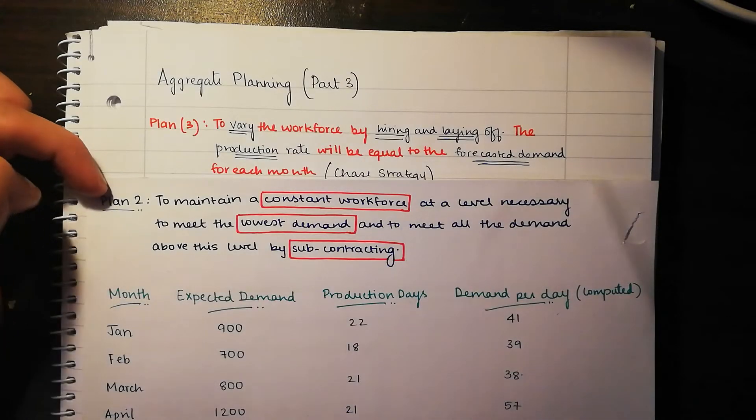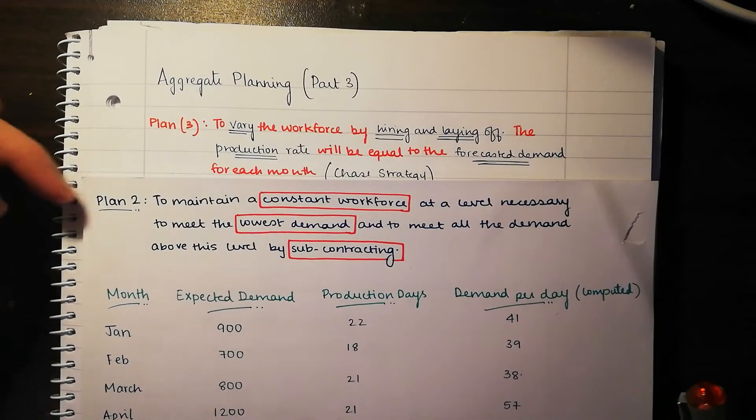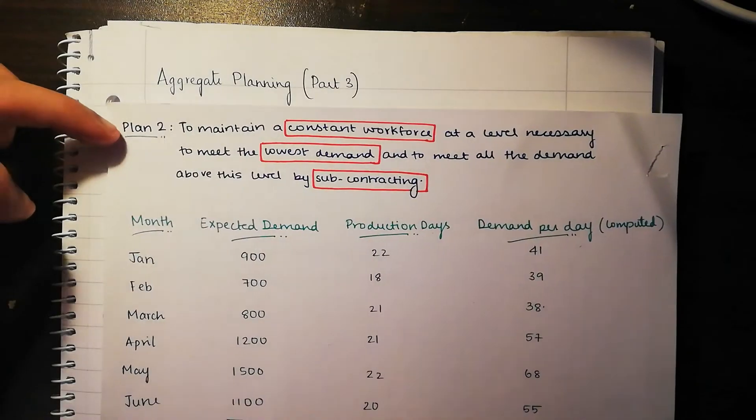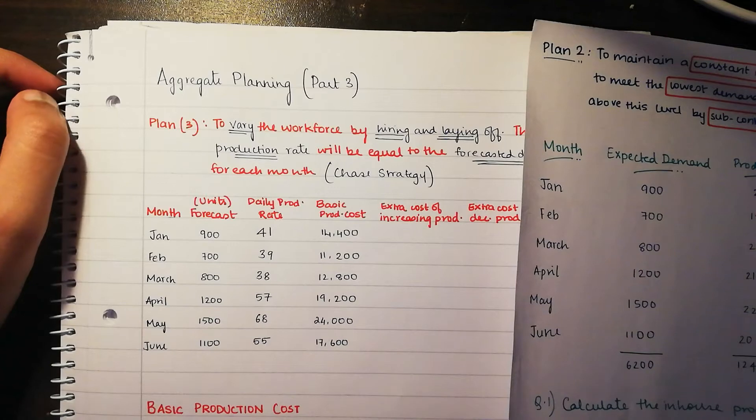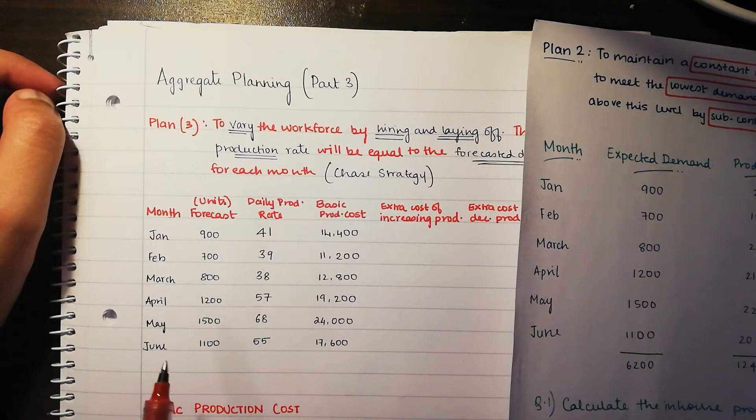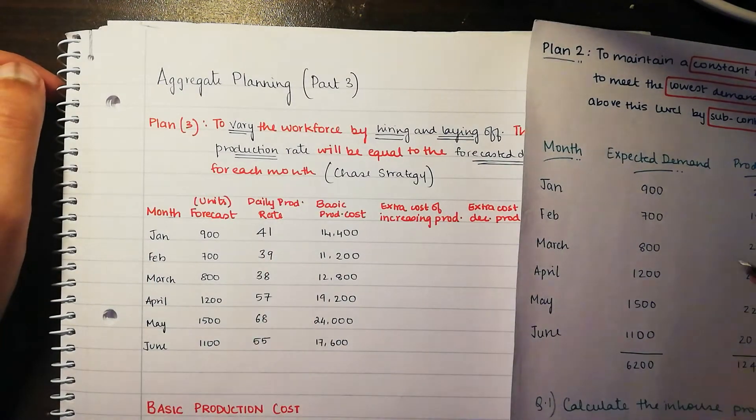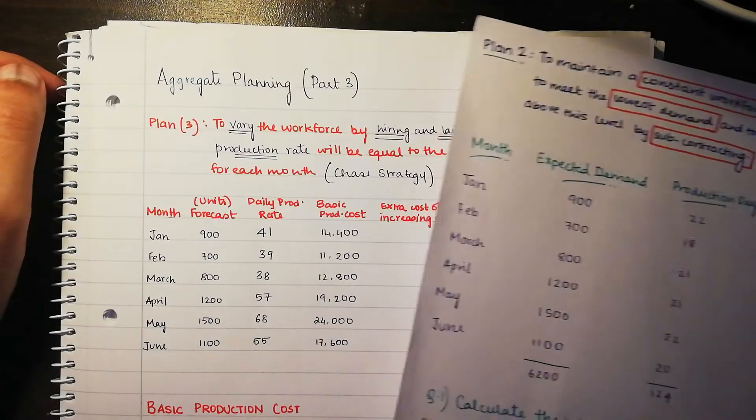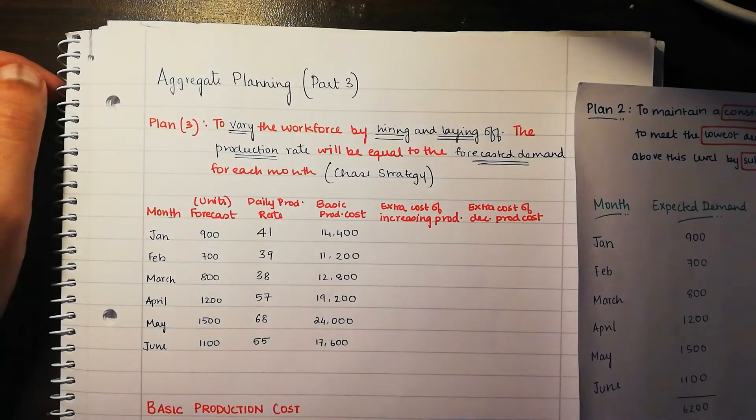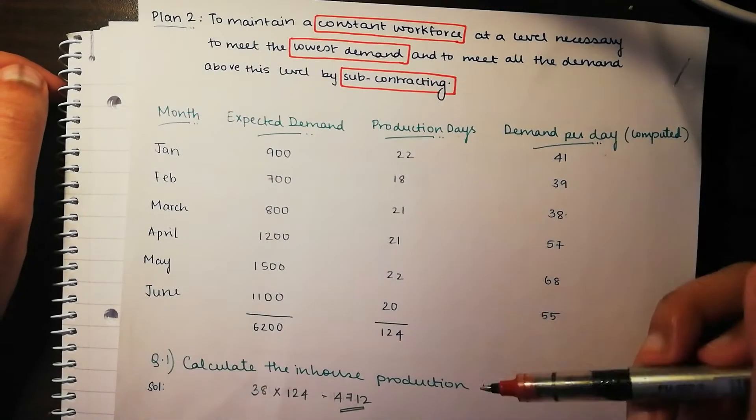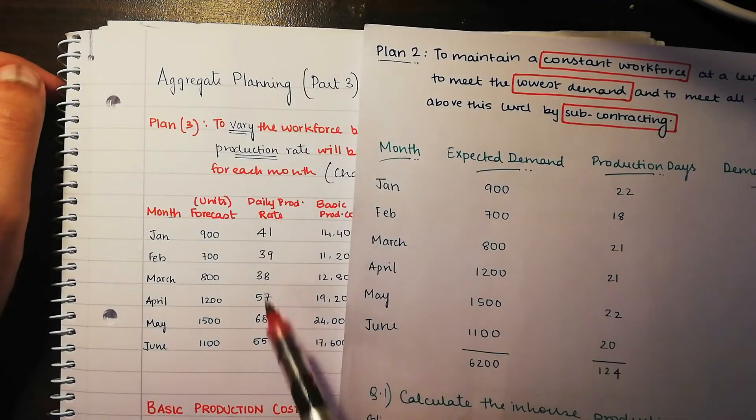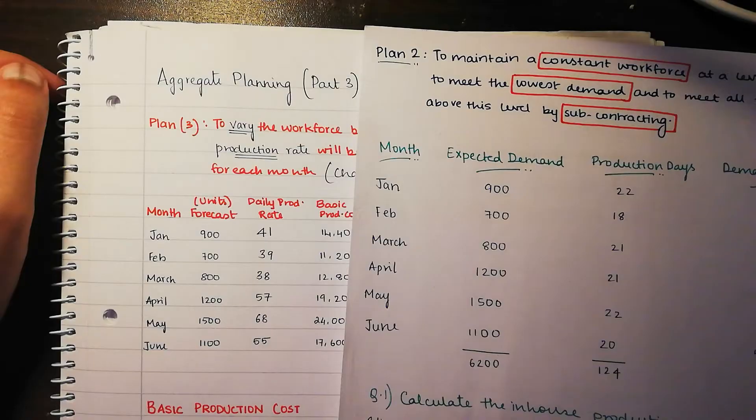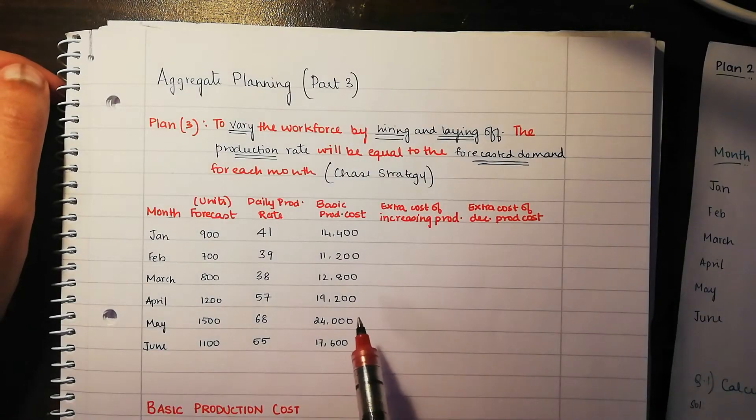To understand this more clearly we'll be using the help of an example and we are borrowing the numbers from here. We have our months, following the 6 month period from Jan to June, we have our forecasted demand, that's the expected demand. Our daily production rate which we have received from the production days, 900 divided by 22 which is 41, which is carried forth over here.